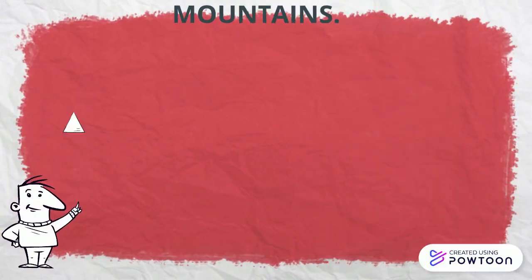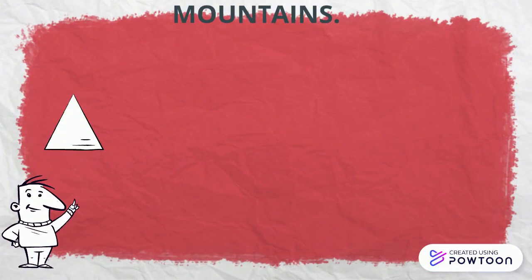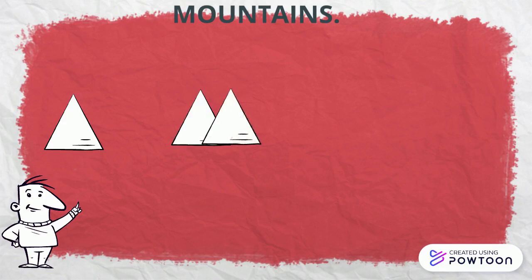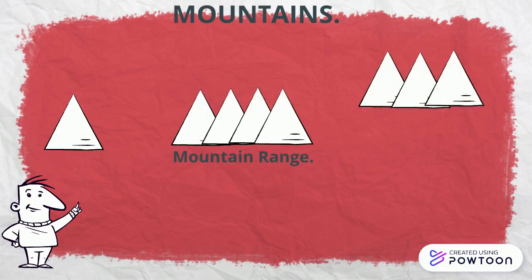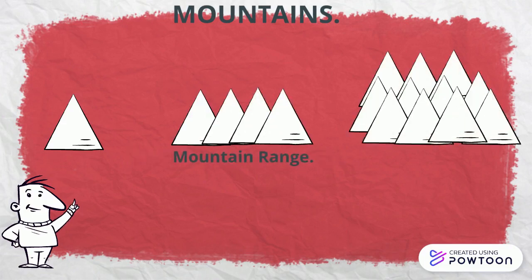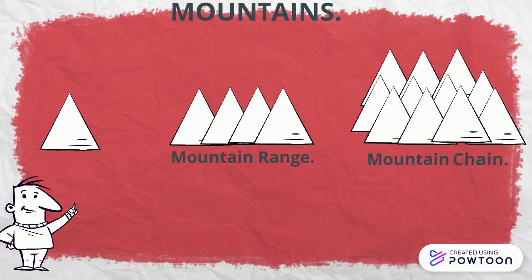Now we are talking about mountains. We can see mountains alone, or we can see a group of mountains, which is called a mountain range, and a group of mountain ranges, which is a mountain chain.